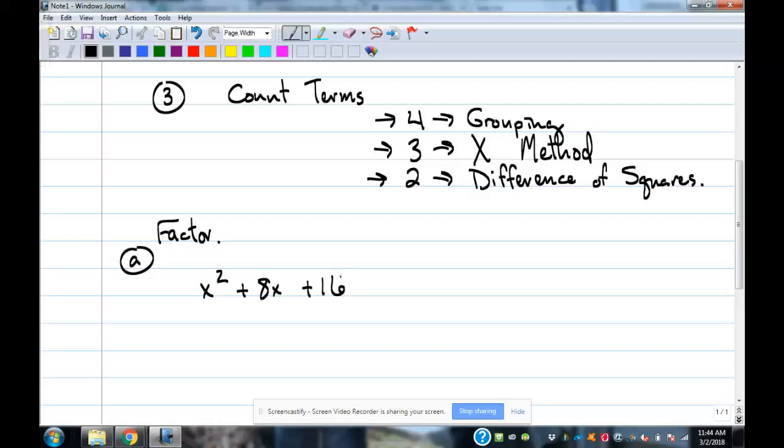That is descending order. Yes. Is there a GCF across the whole problem? No. So then we count the terms. How many terms are there? Three. So that means we're going to do what? X method. So what goes on the top part of the X here? 16. 8 goes in the bottom. What multiplies to be 16 and adds to be 8? 4 times 4.